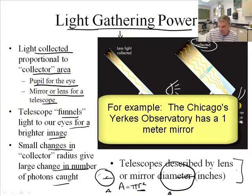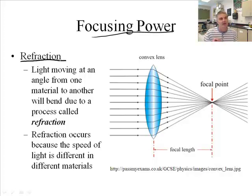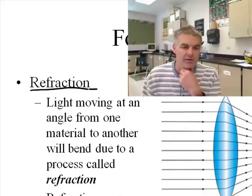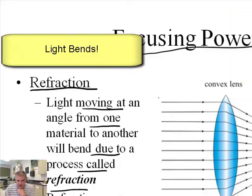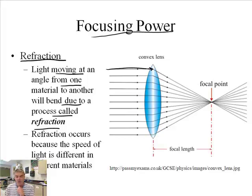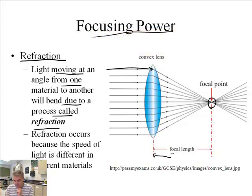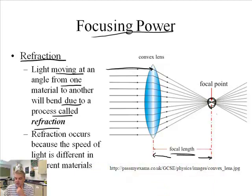Focusing power. There's something called refraction. Light can refract — when light moves at an angle from one material to another, it bends. This is called refraction. If light comes into a lens — like your eye, sunglasses, or eyeglasses — it bends the light and brings it to something called the focal point. The distance from the lens to that focal point is called the focal length. That focal length takes all the incoming light and focuses it to one point so you can see clearly.